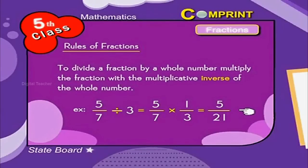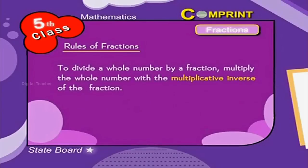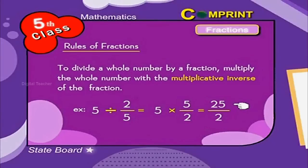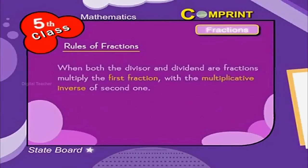To divide a whole number by a fraction, multiply the whole number with the multiplicative inverse of the fraction. Here is an example: 5 divided by 2 by 5 is equal to 5 into 5 by 2, so 5 fives are 25, giving 25 by 2. When both the divisor and dividend are fractions, multiply the first fraction with the multiplicative inverse of the second one.